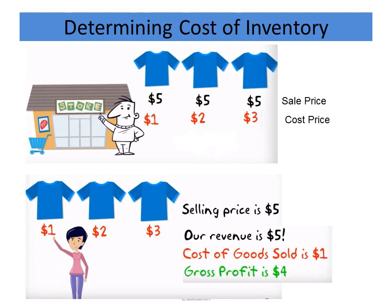A customer comes in and selects the first t-shirt. The selling price is $5, the cost of goods sold is $1, and the gross profit is $4 — the difference between the selling price of $5 and the cost of goods sold of $1. This method is called specific identification: it's easy to identify which t-shirt was sold, what it was sold for, and what it cost. In accounting, we call this specific identification — one of the methods used to compute the cost of inventory, where you can easily identify which item was sold and its cost.